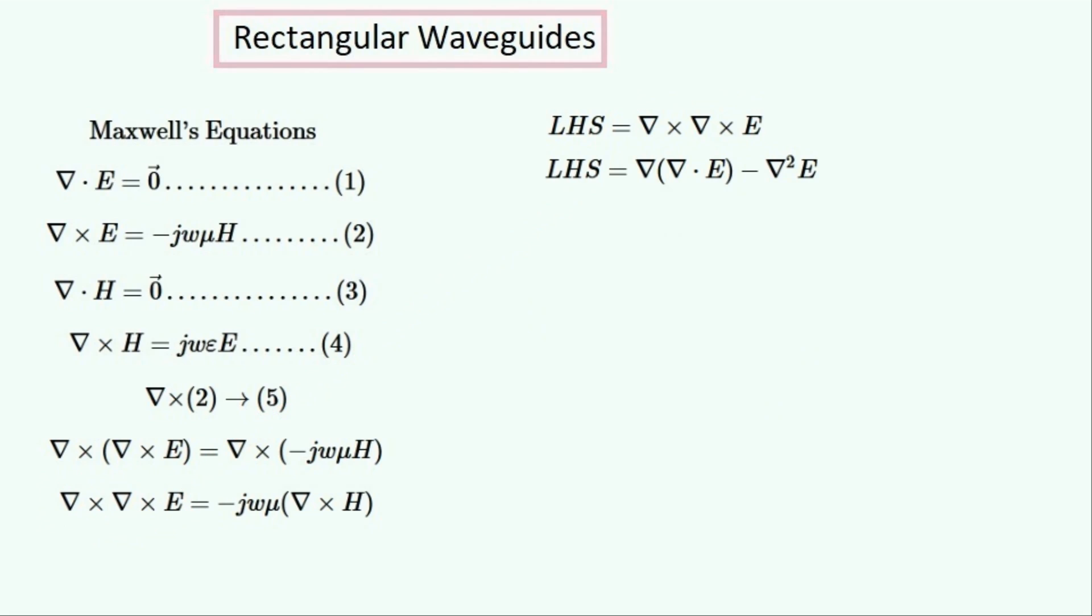Then we'll calculate the left-hand side of this equation. This is what taking the curl twice is equal to. So we know that div E is zero, and we can substitute this in. Then the gradient of zero is also zero, and so we're left with the Laplacian of E.